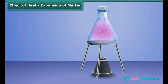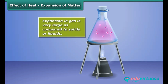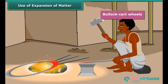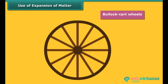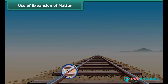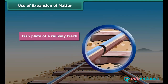Liquids and gases are fluids. They expand on heating. Expansion in gas is very large as compared to solids or liquids. The iron rim is fitted in bullock cart wooden wheels by heating. When the metal cools, it holds the segments of the wooden wheel firmly. A small gap is left between the rails of a railway track where the two rails are joined with the help of a fish plate. The gap is left to allow space for the expansion of rails in summer.